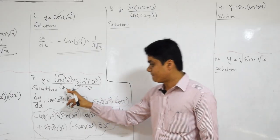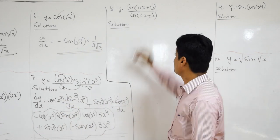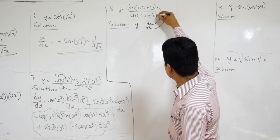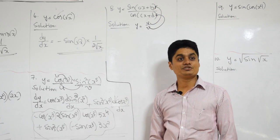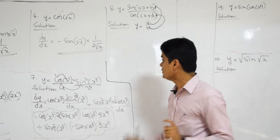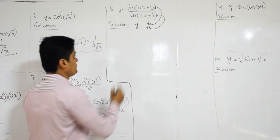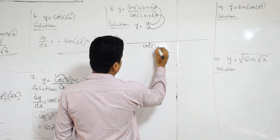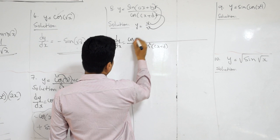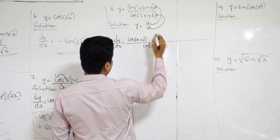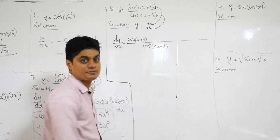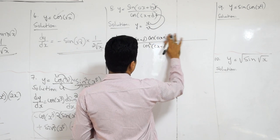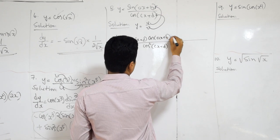In this last question you first applied product rule then chain rule. In the next question, observe carefully — it is first a quotient of 2 functions, then a composite function. So which is your first rule? Quotient rule. So this problem you start by applying the quotient rule first. DY by DX — what is the quotient rule? Cos squared of cx plus d, V squared — V into derivative of U. What is the derivative of sin of ax plus b using chain rule? Cos of ax plus b into derivative of ax plus b. What is the derivative of ax plus b? A.